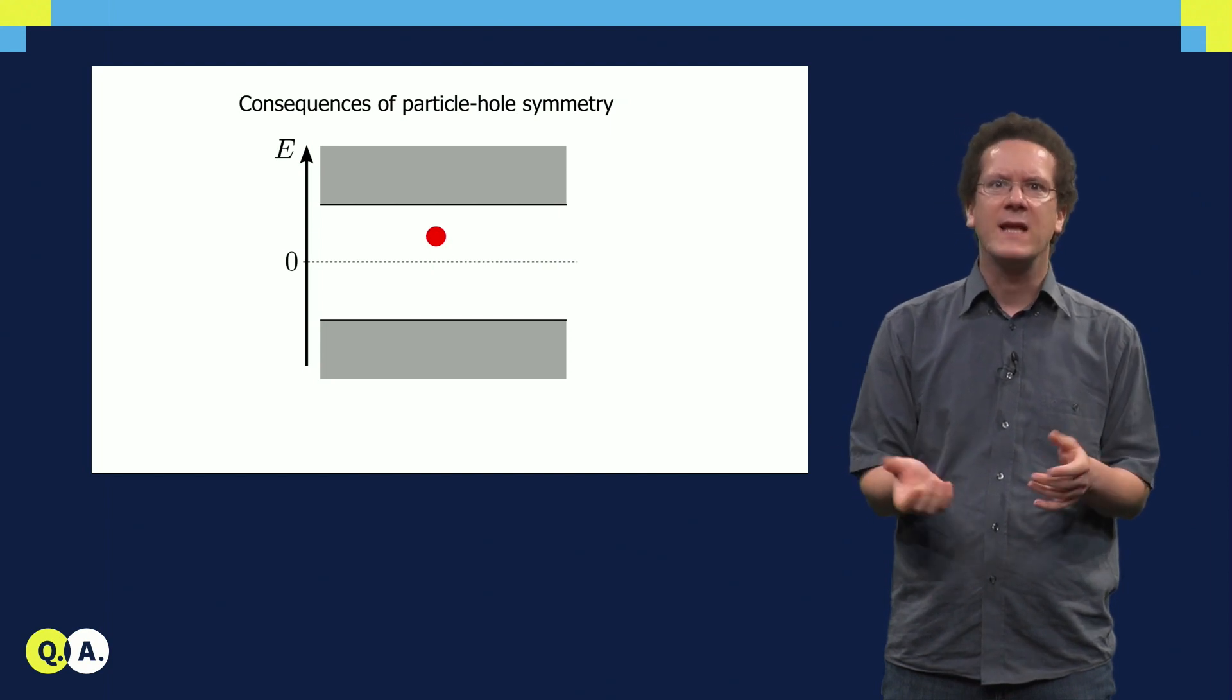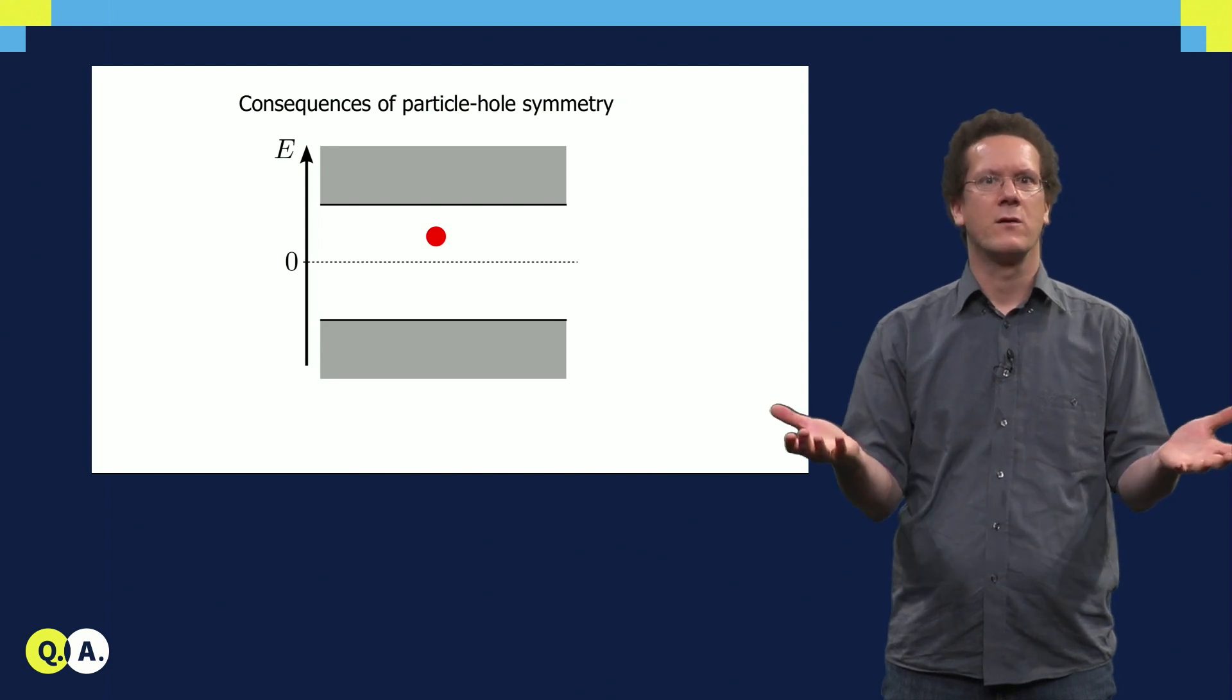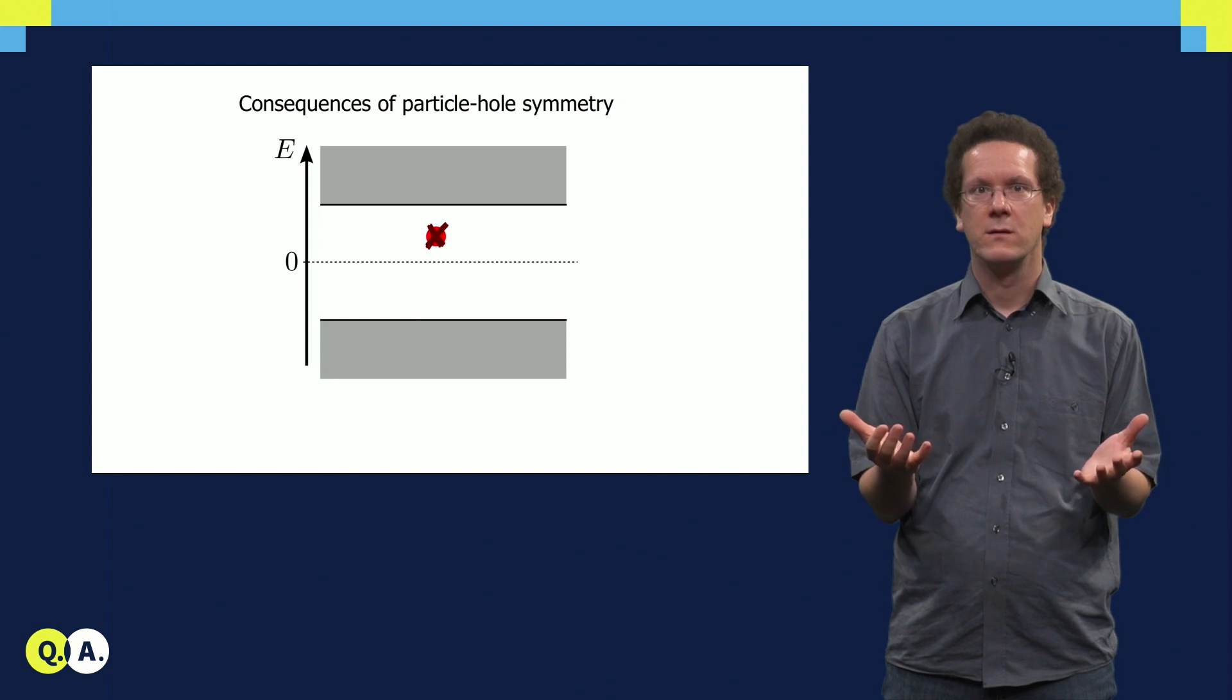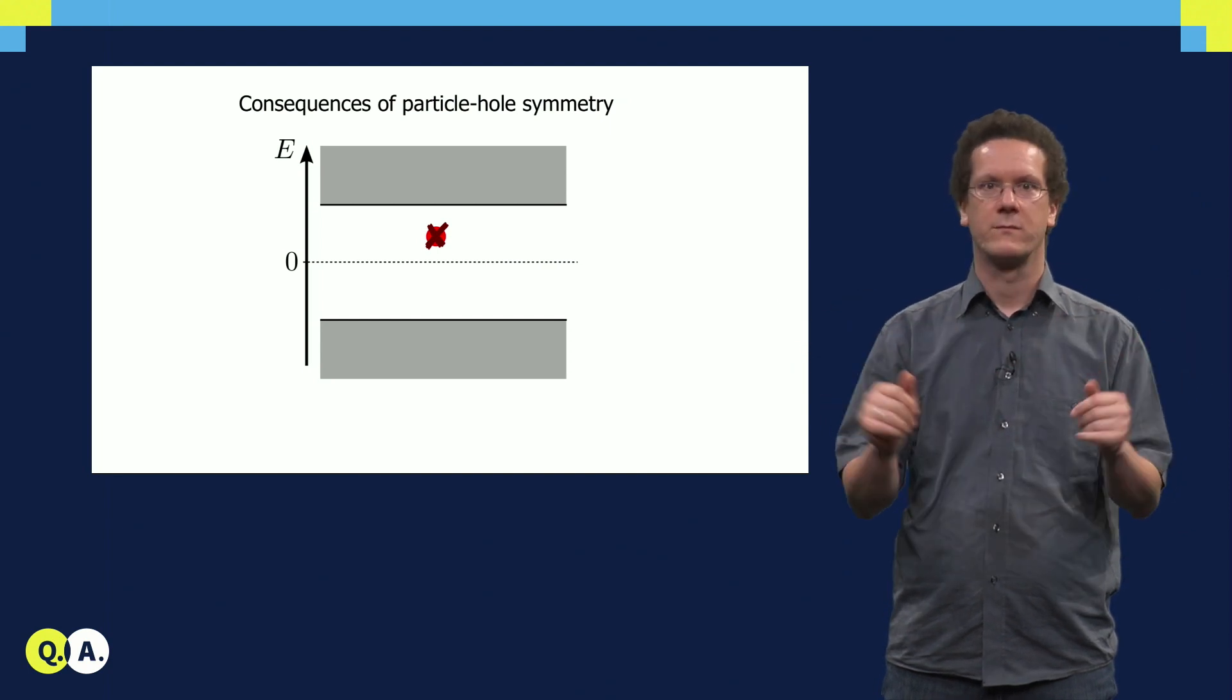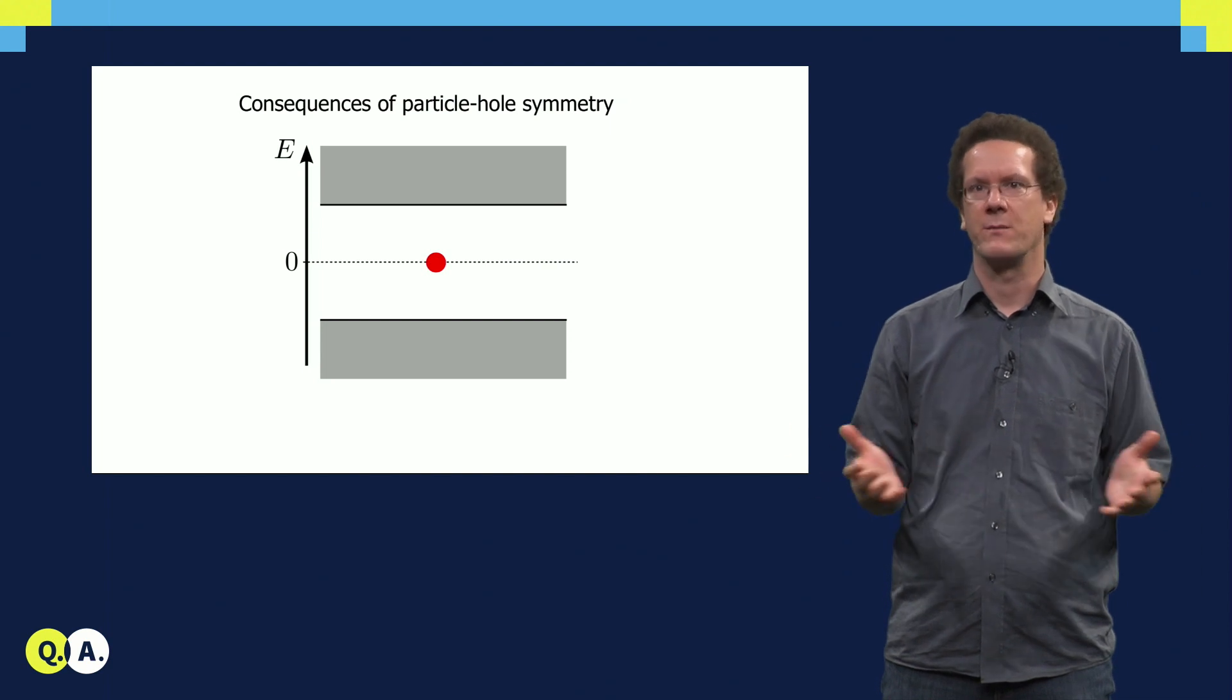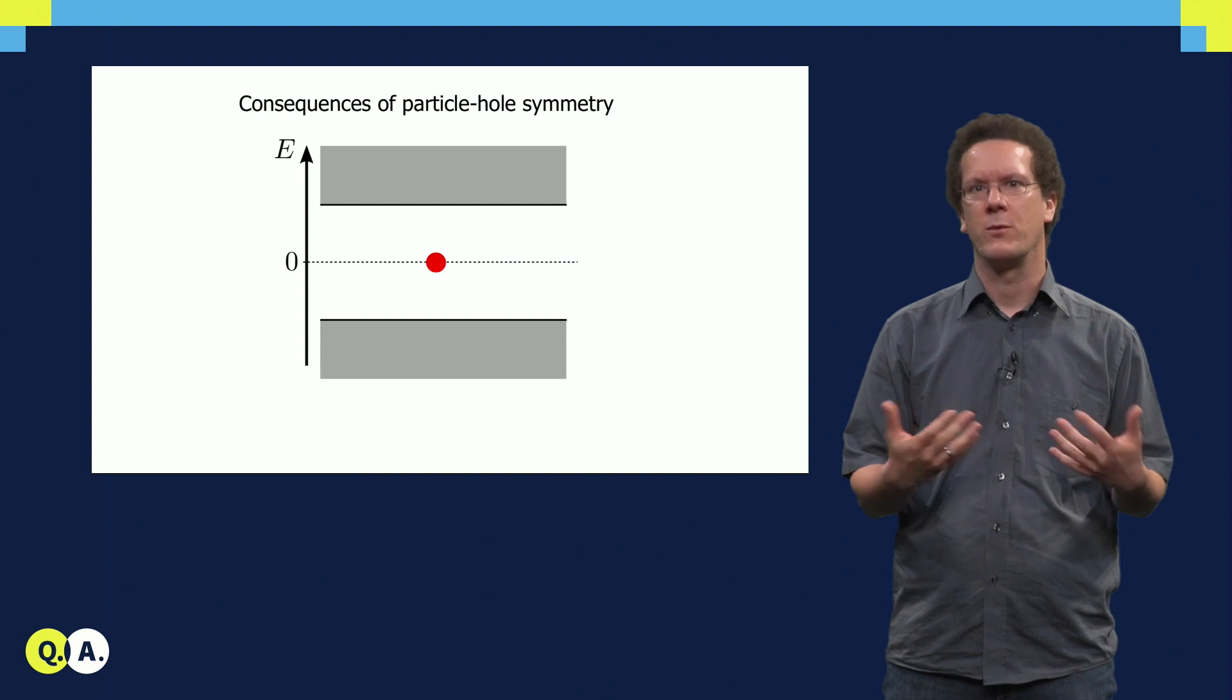If the Majorana state were to move away from zero energy, the system would not have particle-hole symmetry anymore. But that symmetry is fundamental, so this is not allowed. This way the particle-hole symmetry protects the Majorana bound states. We call these states symmetry-protected topological states.